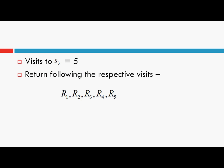In Every-Visit Monte Carlo, we consider each and every visit to state S3 in episode E1. Suppose there are five visits to state S3 in episode E1, meaning state S3 occurred five times. The returns following each visit are R1, R2, R3, R4, and R5. In Every-Visit MC, we consider all these returns, append them to a list of returns following visits to state S3, and finally take the average of all these returns. This average is the value of state S3, and we do this for every state in every episode.